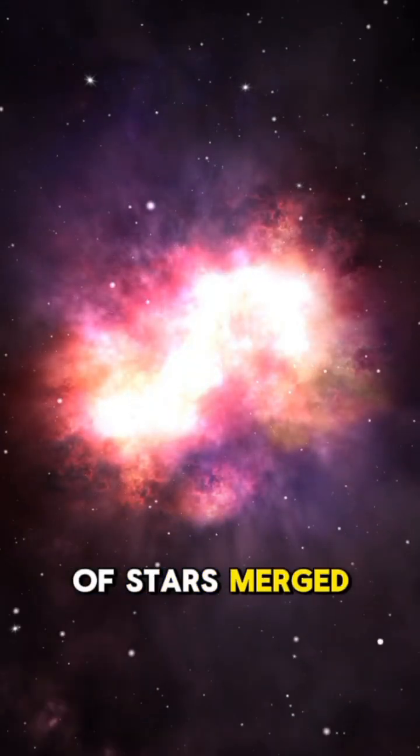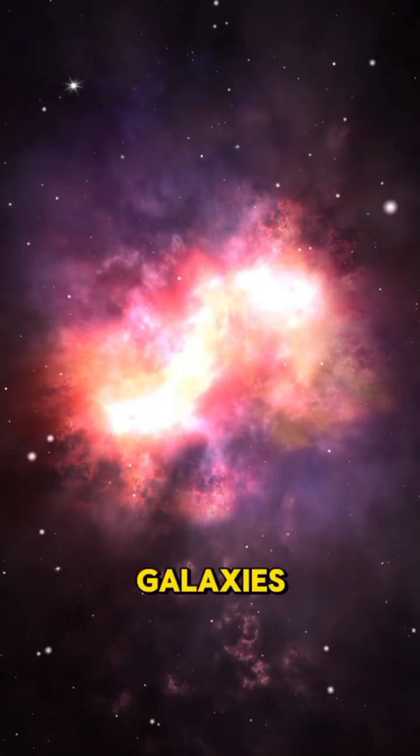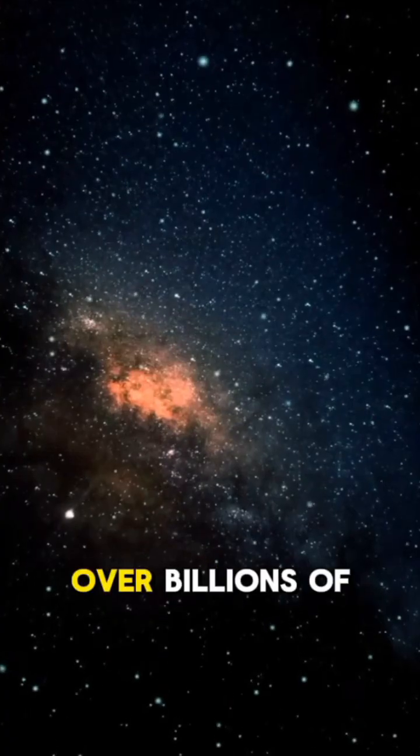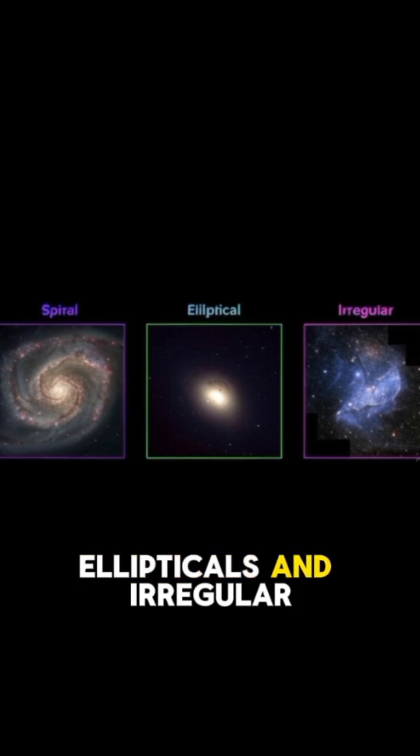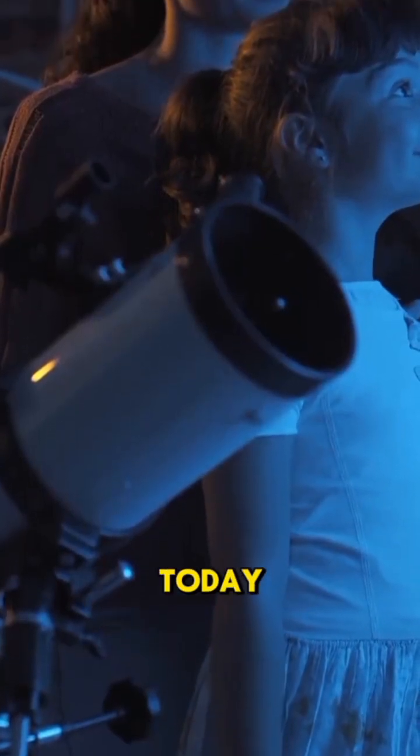These small groups of stars merged, giving birth to the first proto-galaxies. Over billions of years, they collided and evolved, shaping the spirals, ellipticals, and irregular galaxies we observe today.